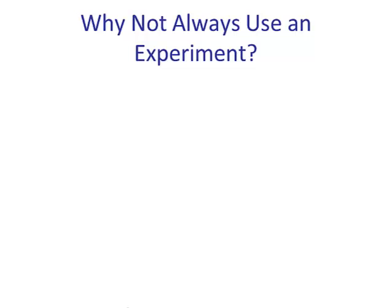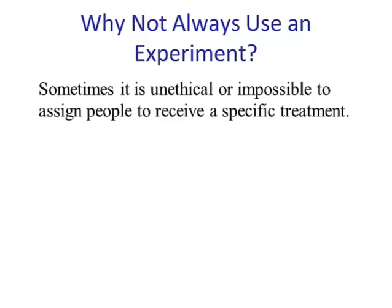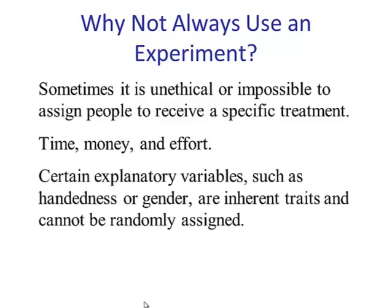So if an experiment is always better than an observational study, why don't we always use an experiment? Well, sometimes it is unethical or impossible to assign people to receive a certain treatment. There is also time, money, and effort involved. And sometimes certain explanatory variables, such as handedness or gender, are inherent traits and cannot be randomly assigned.